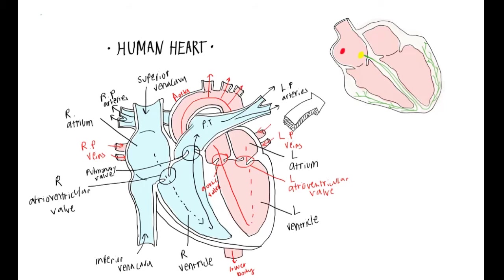You may be wondering where the heart obtains a stimulus for blood pumping. The answer is autorhythmicity — the ability of the heart to generate its own rhythm and contract by itself. In other words, it can generate its own action potentials that trigger contraction without any external stimuli.